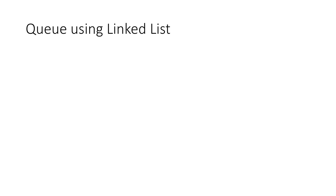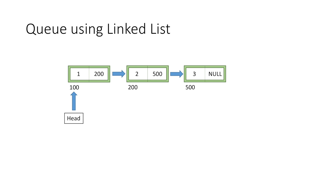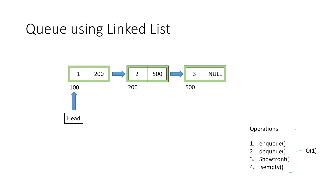Let's take an example of a linked list of 3 elements where the head pointer is pointing to the first element. With linked list we have to perform all queue operations — enqueue, dequeue, show front, and is empty — and we have to do that in constant time, i.e. O(1), because all these operations with queue should take constant time.